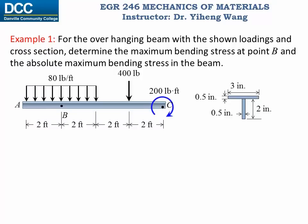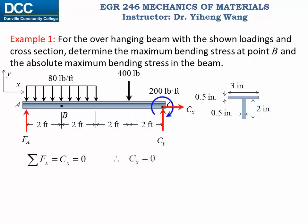We start with the free body diagram, set up our coordinate system, mark our unknown reactions, and then solve for all of them. You might argue we only need to solve for FA, and that is actually true. However, just to be comprehensive, let's solve all three. Resultant force along the x direction equals zero, therefore Cx is zero.